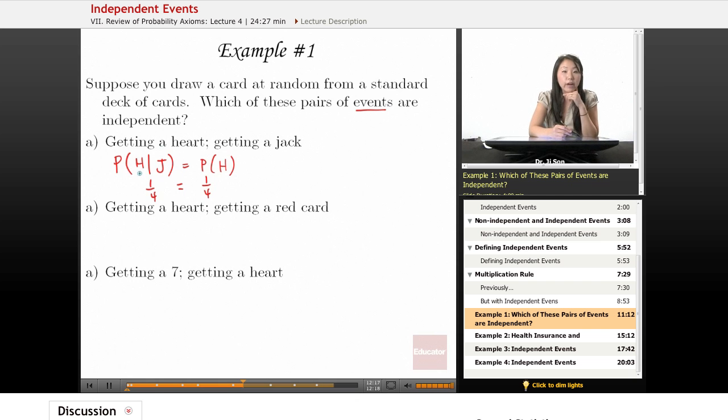Now, I chose probability of heart given jack, but you could have also done it the other way around. I'll write it in a different color. Probability of jack given heart—is that equal to the probability that you'll just draw a jack? Well, the heart world is 13 cards. So out of 13, there's only one jack, so that's one out of 13. And the probability of drawing a jack is four out of 52, which is one out of 13. So eventually we get one out of 13. And we see that it doesn't matter which event you pick as your condition, they're independent.